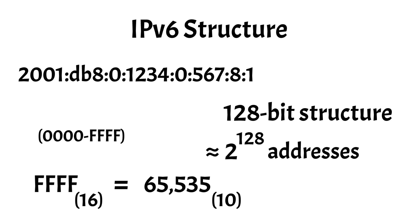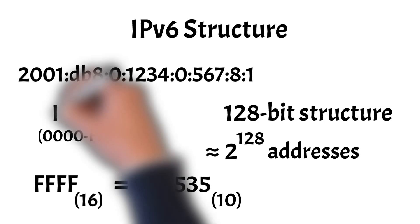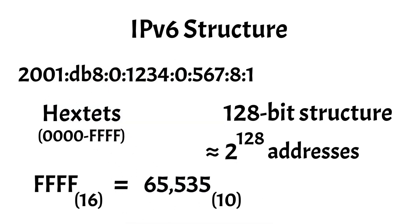Similar to octets in IPv4 addresses, the segments in IPv6 addresses are called hextets because each group is comprised of 16 bits, allowing for exponentially more combinations.